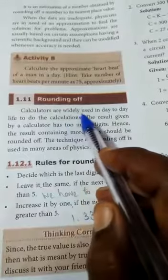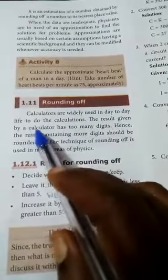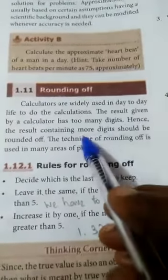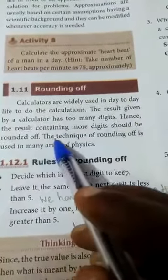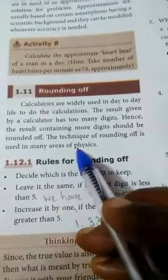Calculators are widely used in day-to-day life to do calculations. The result given by a calculator has too many digits. Hence, the result containing more digits should be rounded off. The technique of rounding off is used in many areas of physics.